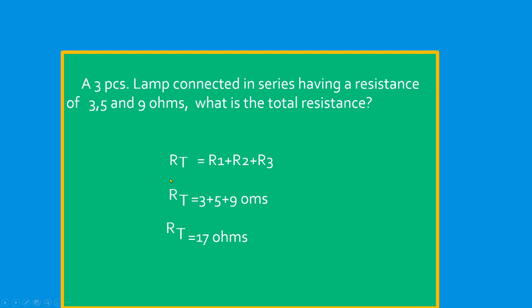As we discussed before, our resistor in series, so this is just like addition. R total equals 3 plus 5 plus 9, so our resistance is 17 ohms.